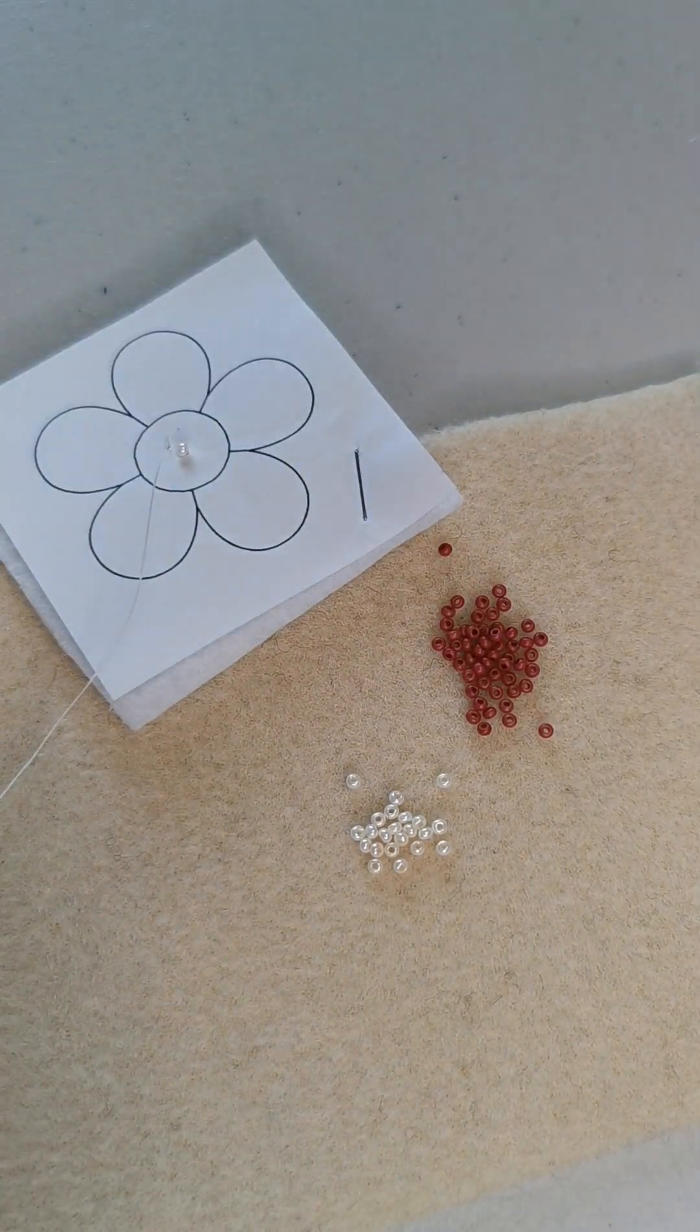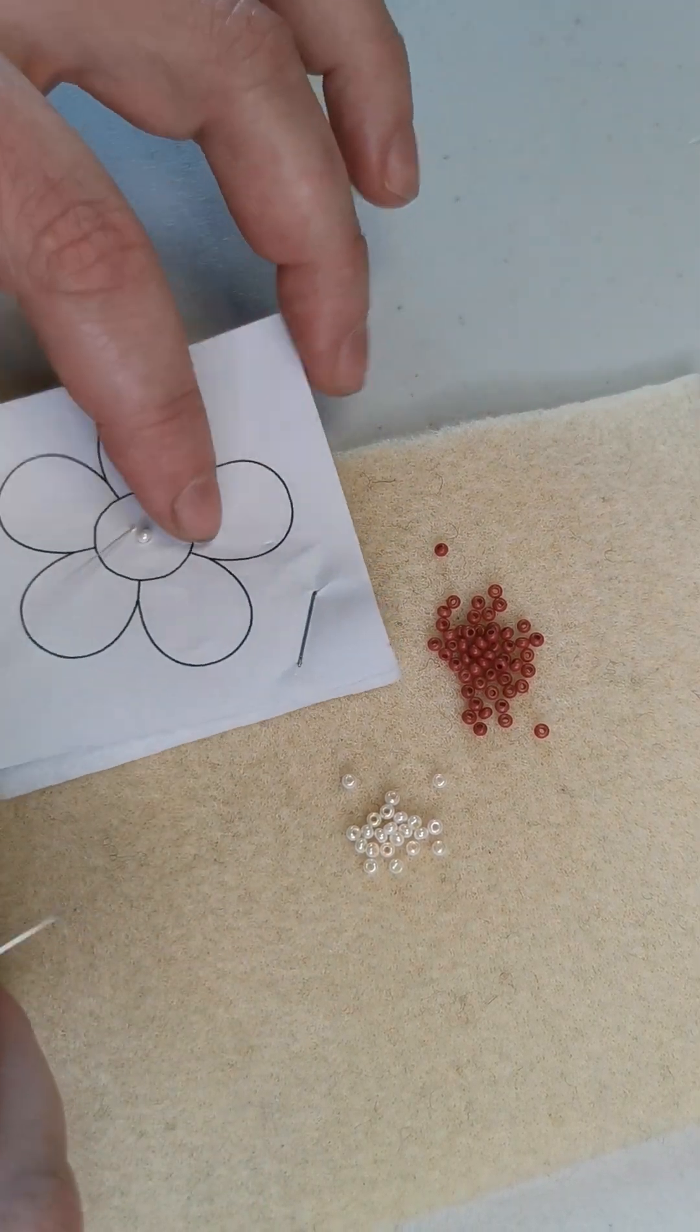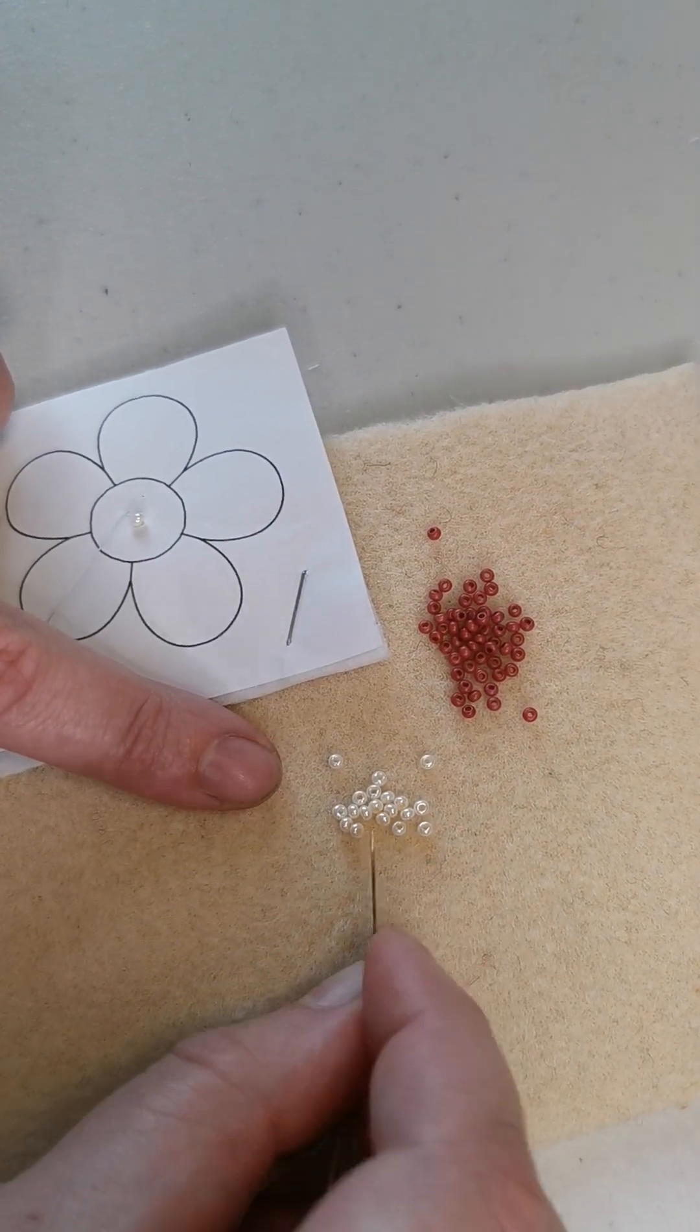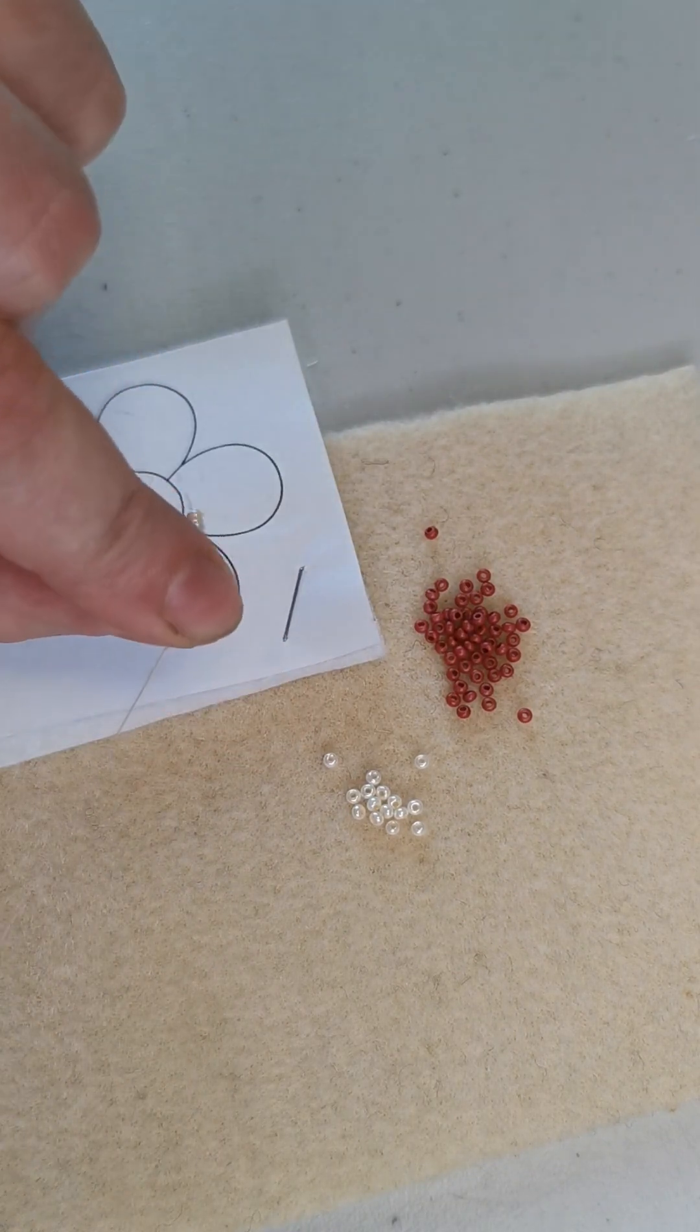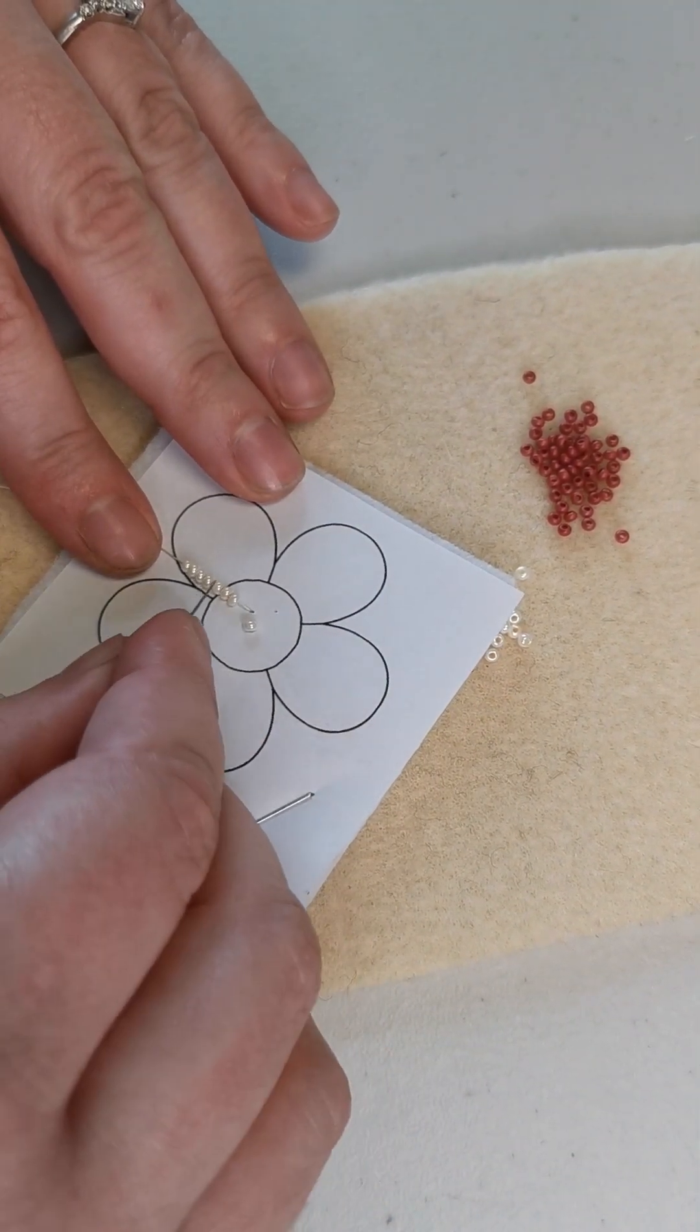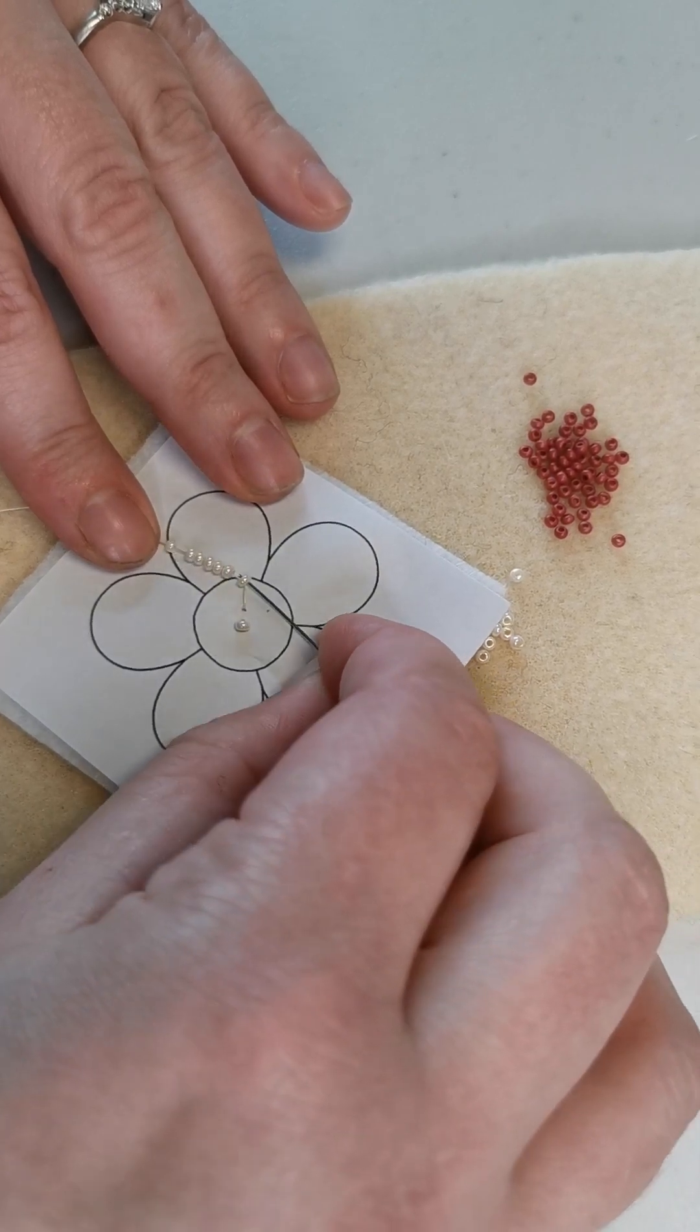I'm going to do it once slowly, then take the beads off and do it one more time so you can really get this piece down pat. I'm going to pick up seven beads in the same color for my next circle: one, two, three, four, five, six, seven. I slide those beads all the way down, so I've got my one bead in the center and seven beads around it.